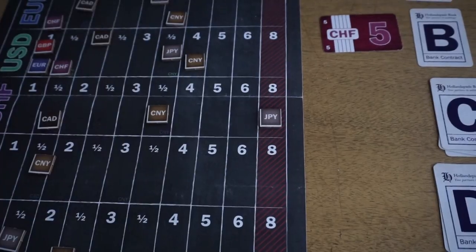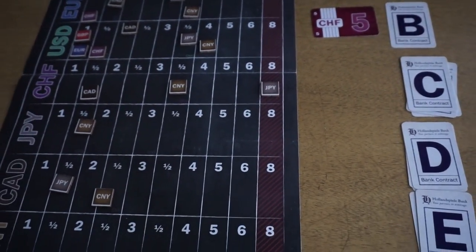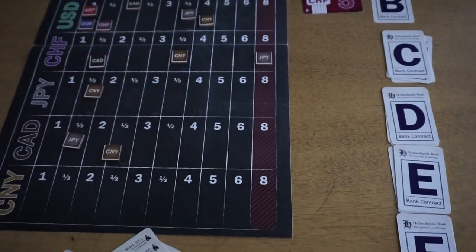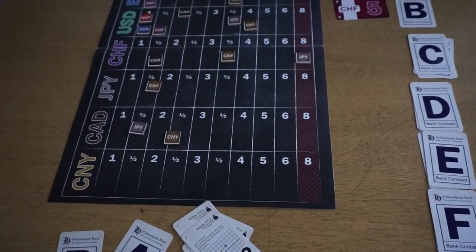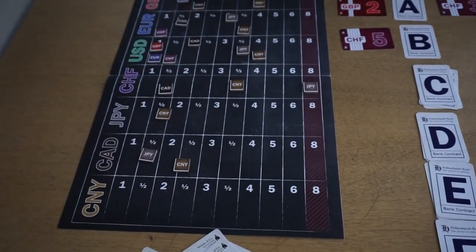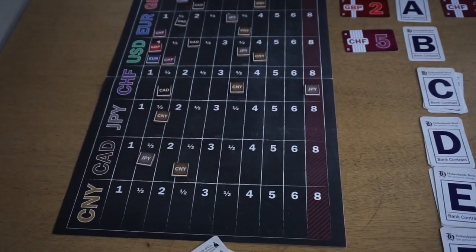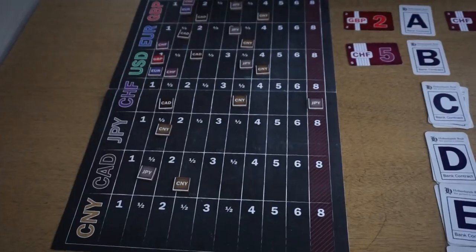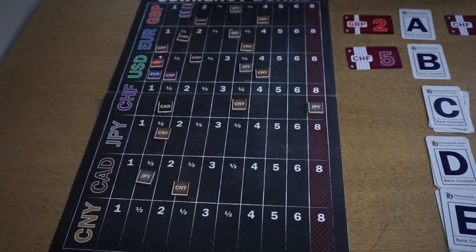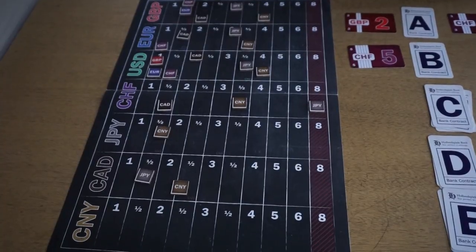At the end of the game, after either someone's gone bankrupt, or after we've gone through all the contracts in the queue, then players are gonna look at the currency board, figure out which currency is the strongest, is the one that is the stronger partner in the most currency pairs. And all the money that you have, all seven different types of money, are all converted to that one type of money, that one strongest currency. The person with the most money wins the game. That in a nutshell is Forex and how you play it.